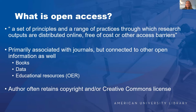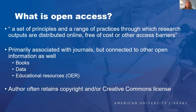Open access applies to books, book chapters, data, and even textbooks and other educational resources—called open education resources. One of the big principles underlying open access is copyright. Whenever you make a creative work of any kind, the person who makes it is the copyright holder. To facilitate open use and distribution, there's something called a Creative Commons license that you can apply as the copyright holder so others understand how they can use your work. Having that license is an essential part of open access.